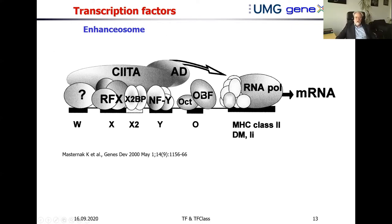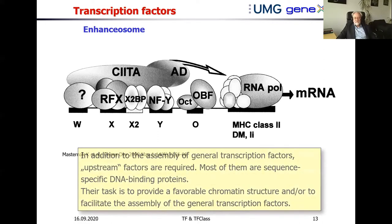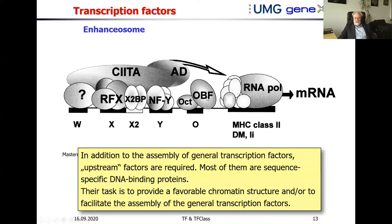Nearly any component of the pre-initiation complex can be targeted by transcription factors directly, or through activators, co-activators, or adapter proteins — forming what we call an enhancer zone. In addition to the assembly of general transcription factors, a number of upstream factors is required, and the number and kind of these upstream factors depends very much on the individual gene. These enhancer zone factors are required to give chromatin a favorable structure for transcription, for instance by initiating acetylation of histones and nucleosomes in the relevant gene region.